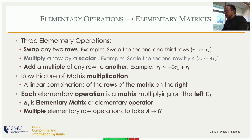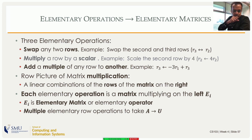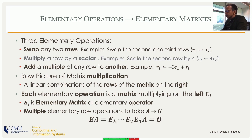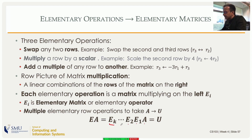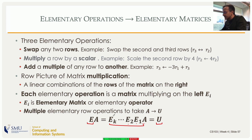Each elementary operation is a multiplication on the left by some matrix, which I'll call E_i — the elementary matrix. So if I have a series of operations, each is a multiplication. Starting with matrix A, I apply k such operations, and all k of them when multiplied together give me a matrix E, the product of those matrices. Finally, what I get is an upper triangular matrix, which is the row echelon form.